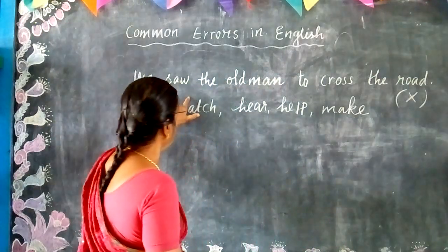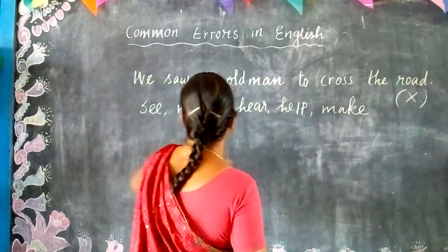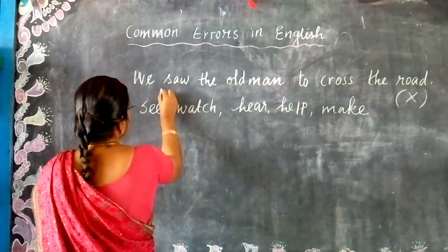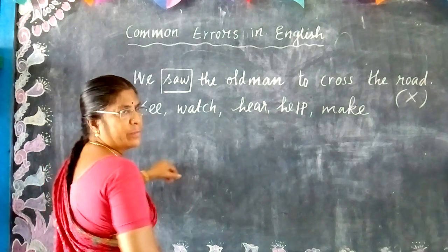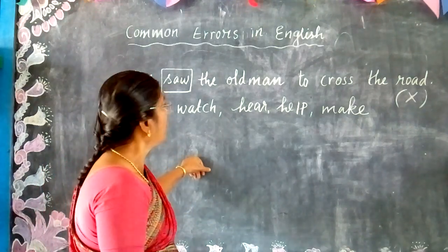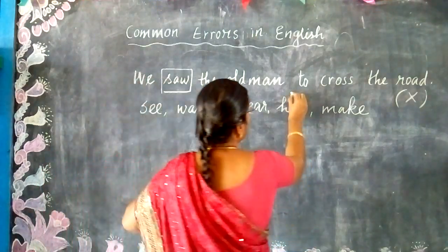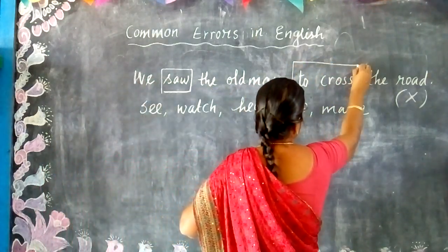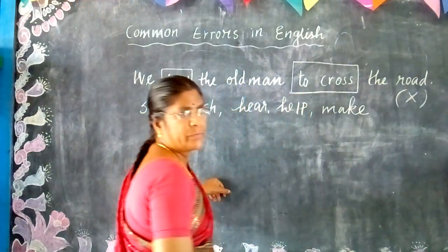We saw the old man. Here, 'saw' is a main verb. 'To cross' is a to-infinitive verb.